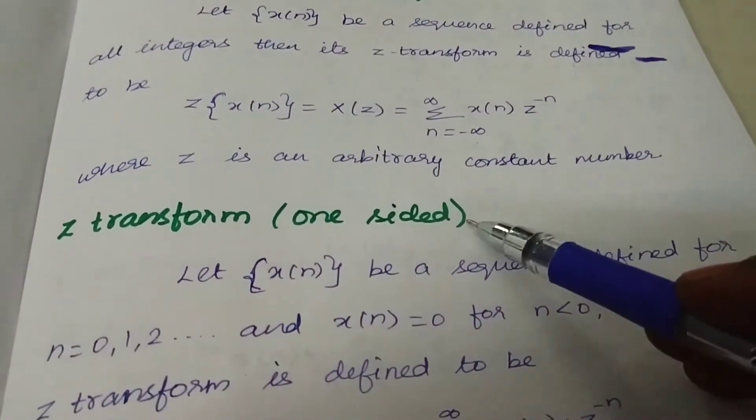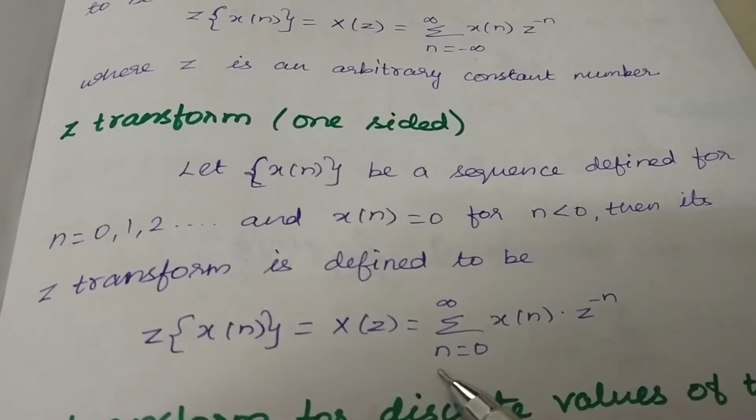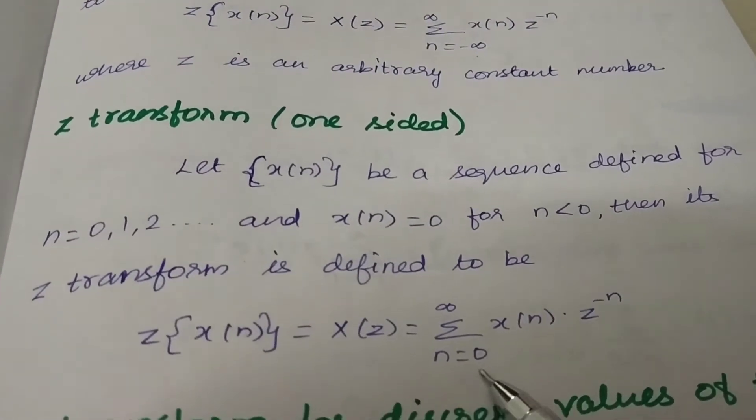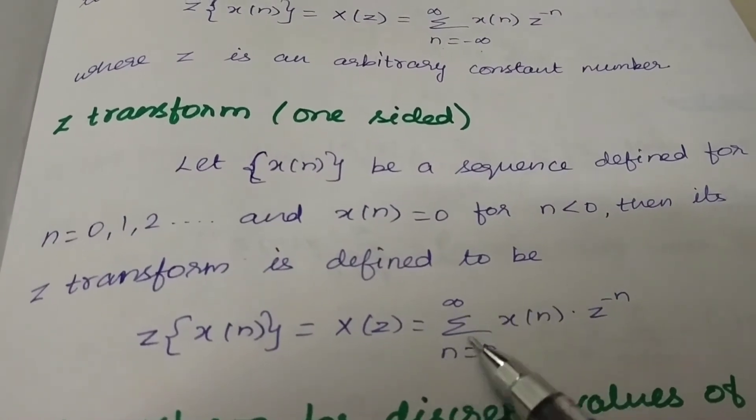For the 1-sided Z-Transform, the summation is over n equal to 0 to infinity. So the lower limit starts from 0 instead of minus infinity.